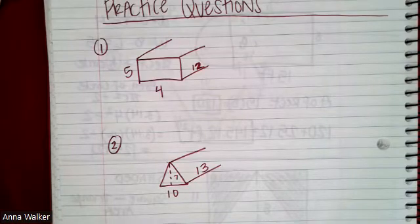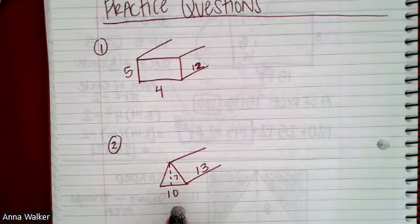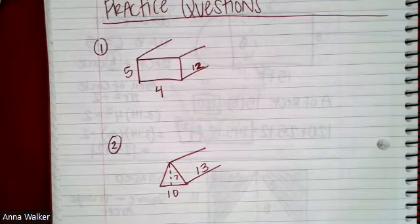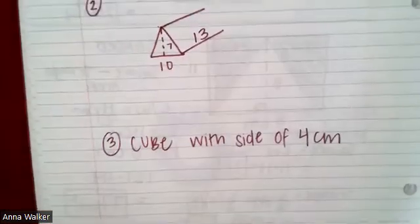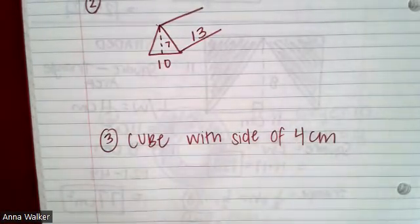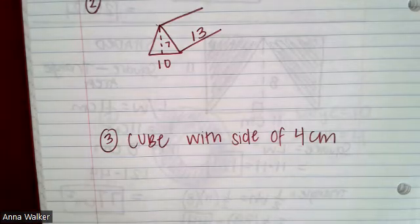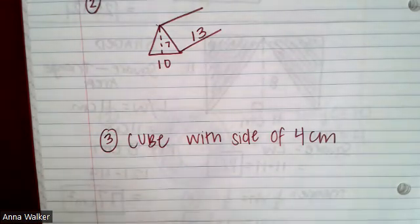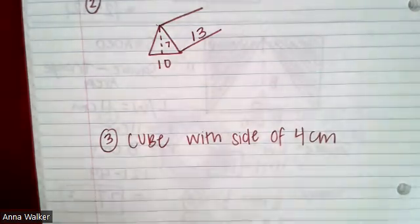Your first practice question: find the volume of a rectangular prism with a height of 12, a length of 5, and a width of 4. Second: a triangular prism where the triangle has a base of 10 and a height of 7, and the height of the prism is 13. Third: find the volume of a cube with a side of 4 centimeters — same formula as a rectangular prism. Check the table of contents if you have questions, and I'll see you later. Bye!